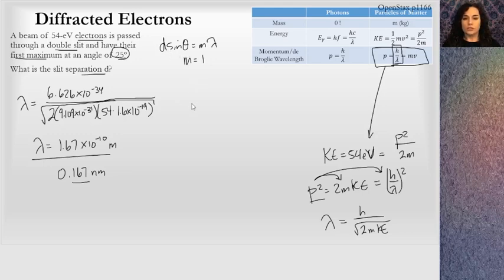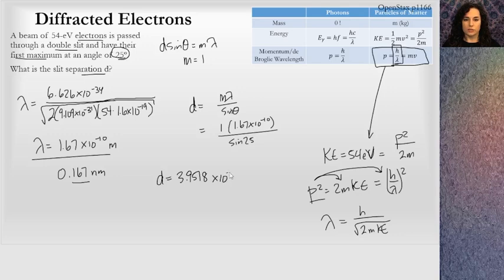So let's solve for d. d equals lambda over sine theta. So I can put that in. m equals 1. Lambda is 1.67 times 10 to the negative 10th. And then I can divide by sine 25. And when I run this all through the calculator, I get 3.9518 times 10 to the negative 10th meters. Which, at face value, you may not think much about it. But when I look at this, I'm like, that's about 4 angstroms.